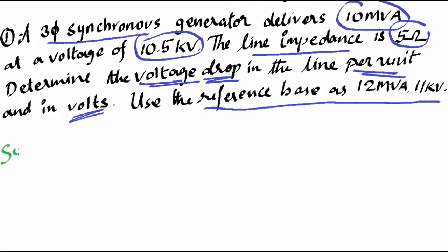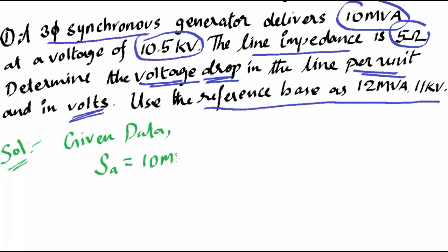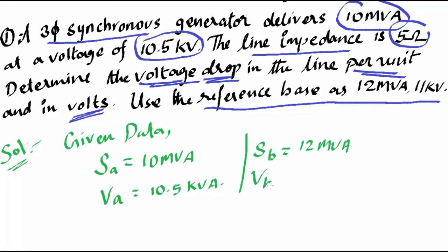Let's write down the given data and make the solution. The actual MVA rating is S_actual = 10 MVA, and the actual voltage rating is V_actual = 10.5 kV. Apart from this, the base values are given: S_base = 12 MVA and V_base = 11 kV.